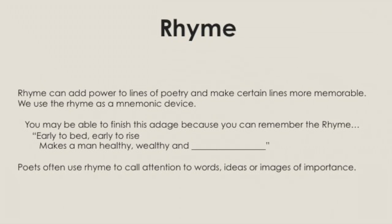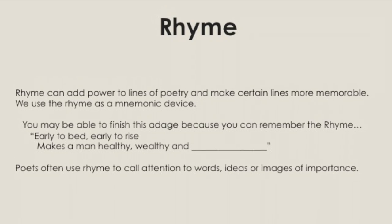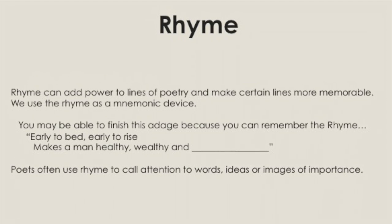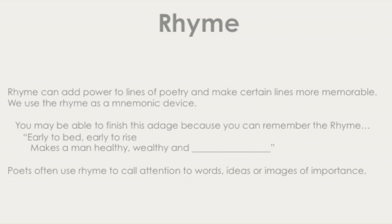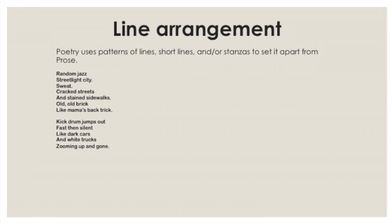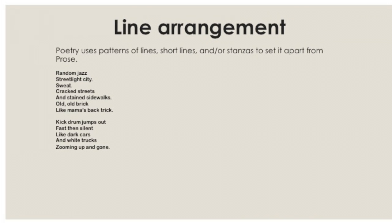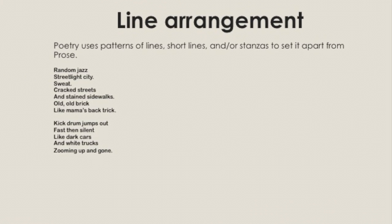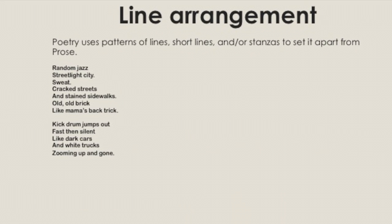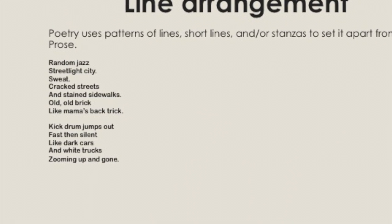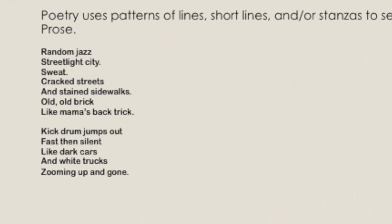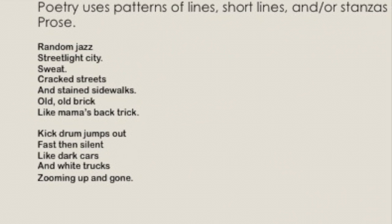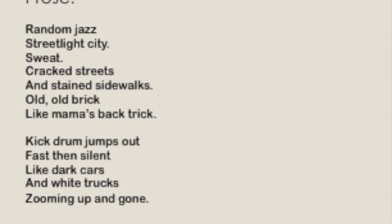We naturally remember lines that rhyme over lines that do not. Poets love to create memorable lines, and rhyme helps us as a mnemonic device. It's easy to spot poetry by the line breaks or line arrangement. If you look at this piece, it's obvious that the short lines, one-word lines, and odd punctuation represent poetry.